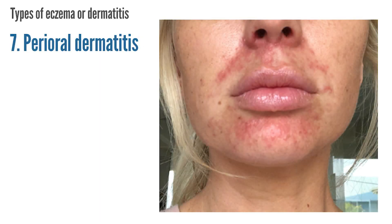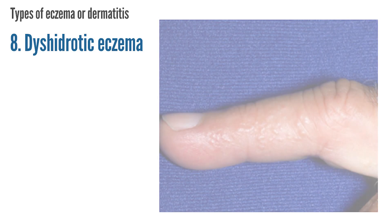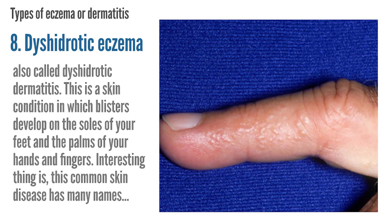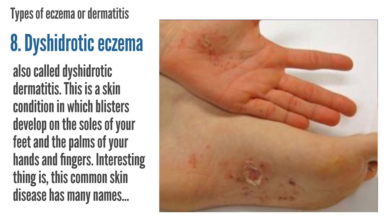Perioral Dermatitis. Dyshidrotic Eczema, also called Dyshidrotic Dermatitis, is a skin condition in which blisters develop on the soles of your feet and the palms of your hands and fingers.